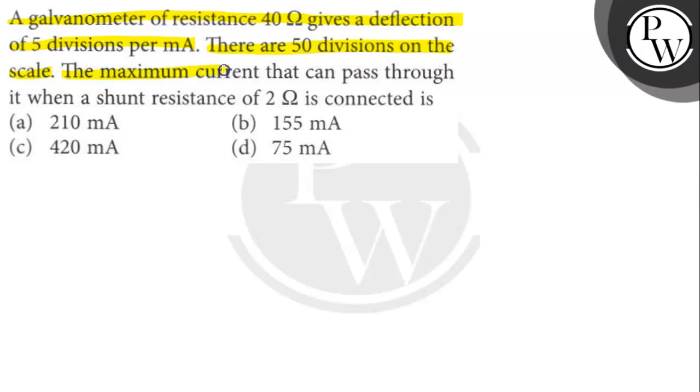The maximum current that can pass through it when a shunt resistance of 2 Ohm is connected is what? Let's find out.